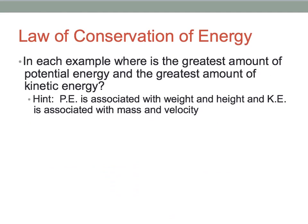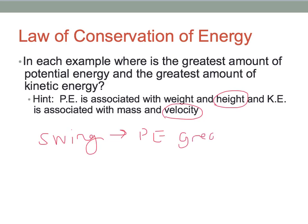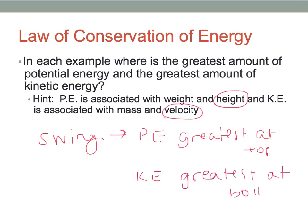Potential energy deals with weight and height; kinetic energy deals with mass and velocity. The key things to pinpoint are height and velocity. With the swing, our potential energy is greatest at the top of the swing. The worst point to walk in front of someone on a swing is right at the bottom — that's when they're moving the fastest and have built up the most speed. We've talked about this with roller coasters too.